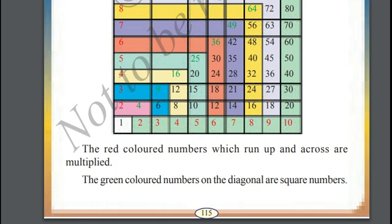Look at the diagonal numbers: 1, 4, 9, 16, 25, 36, 49, 64, 81, 100. These all are square numbers.